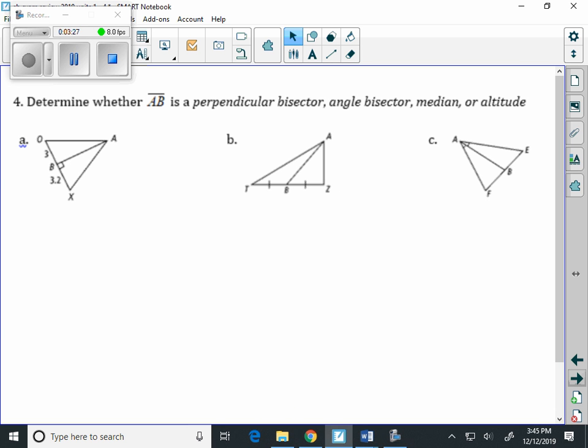Number 4. Determine whether AB is a perpendicular bisector, an angle bisector, a median, or an altitude. As we look at letter A, what we see is that the length of OB has a length of 3, and the length of BX has a length of 3.2. So, it's not a perpendicular bisector because one of those lengths is 3 and one of those lengths is 3.2. It's not a median. It has to hit in the middle. We're not talking about angles, so it's not an angle bisector. So, our only other choice is that this is an altitude.